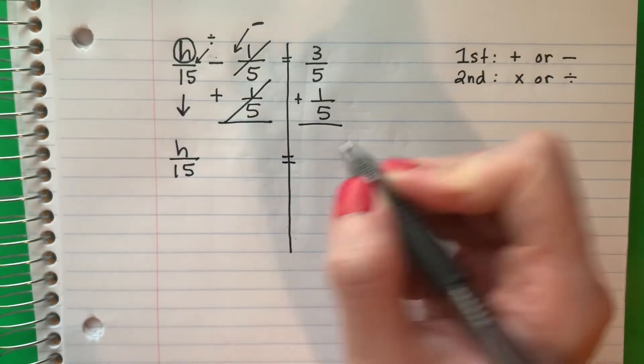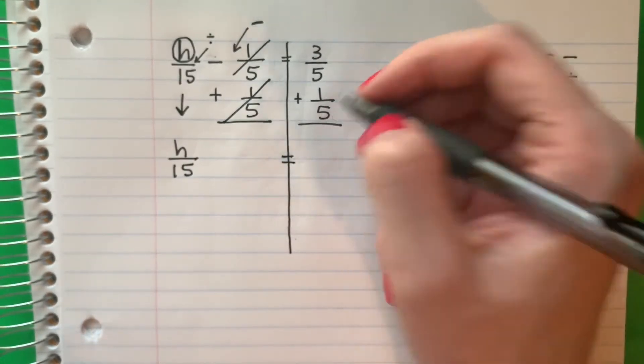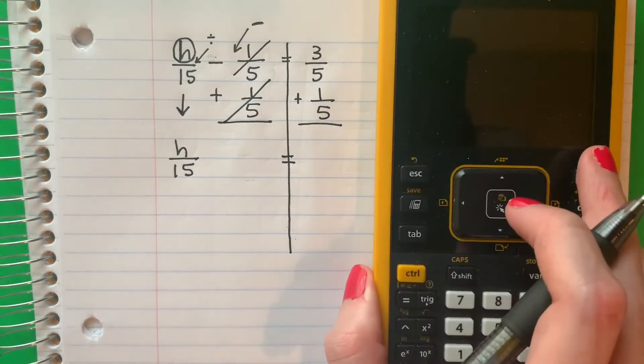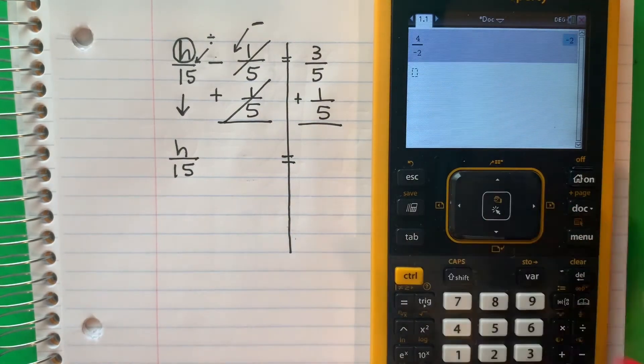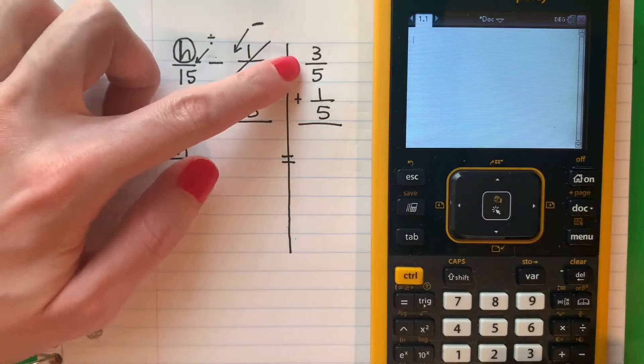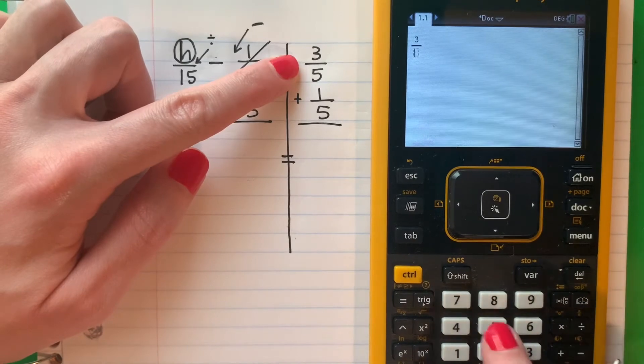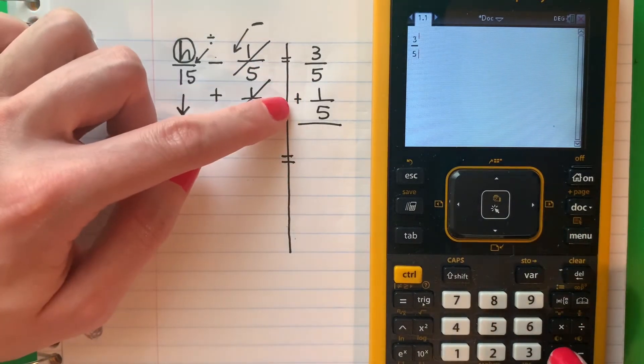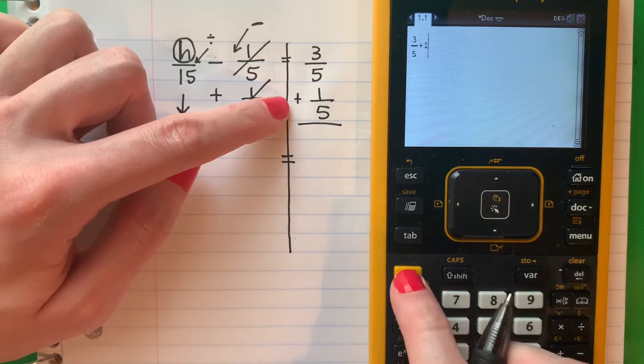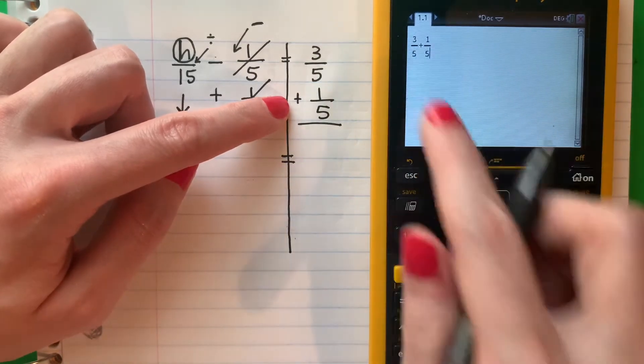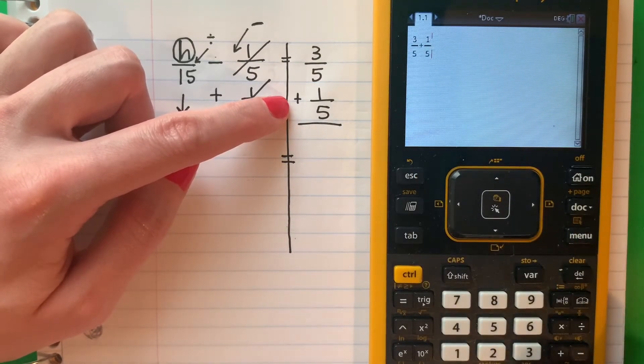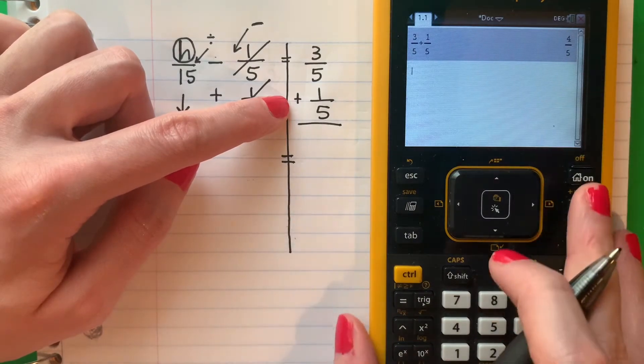So I'm going to copy equals. I will put this in the calculator, in la calculadora. So I'm going to put 3 fifths. Go to the right. I'm going to put plus 1 fifth. Just like this. Go to the right. Enter. And I get 4 fifths.